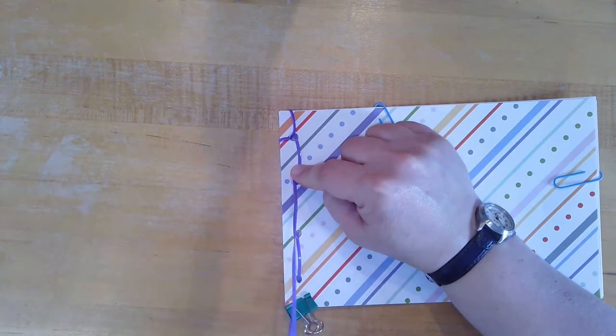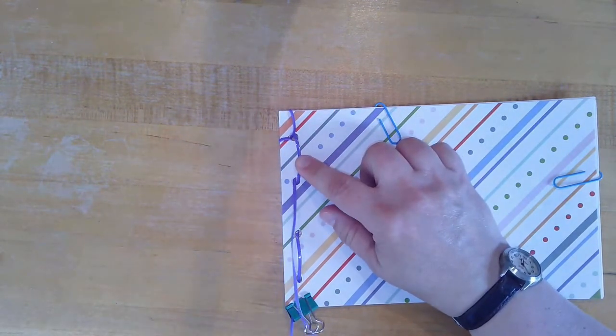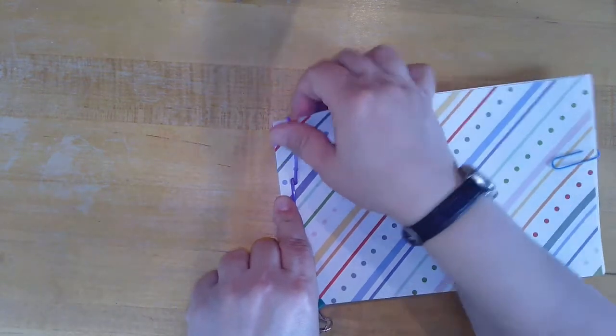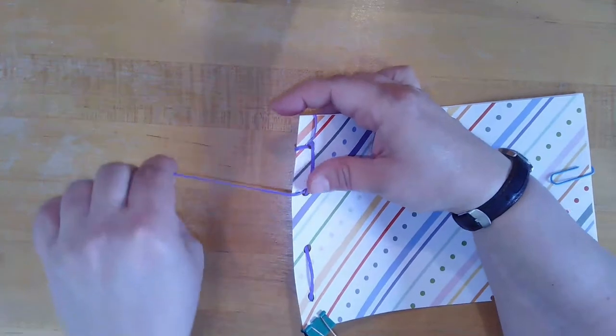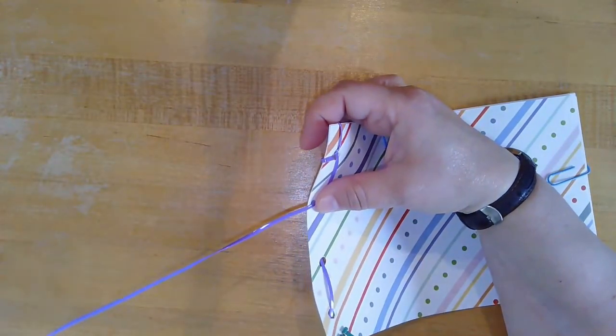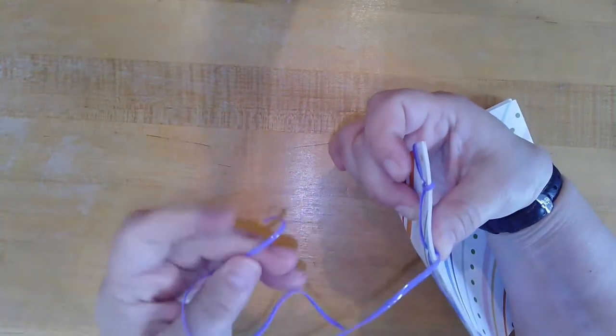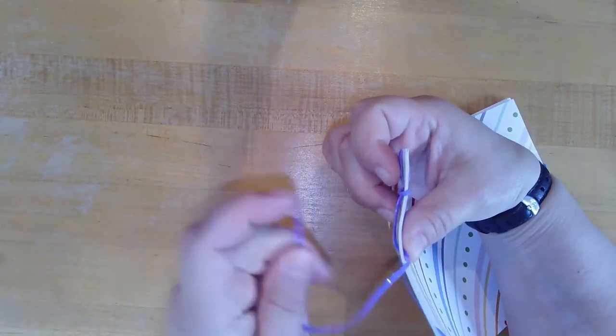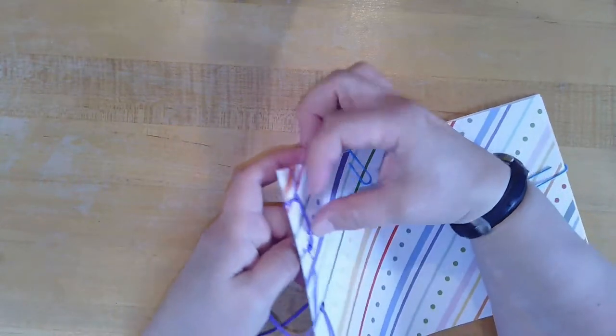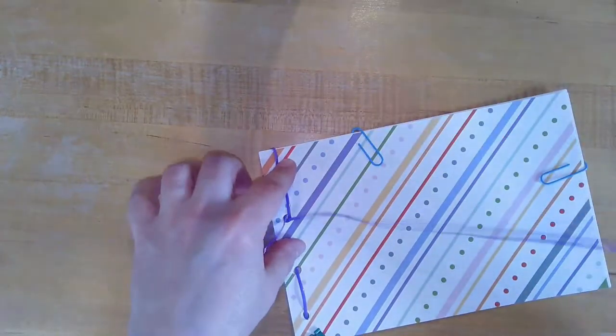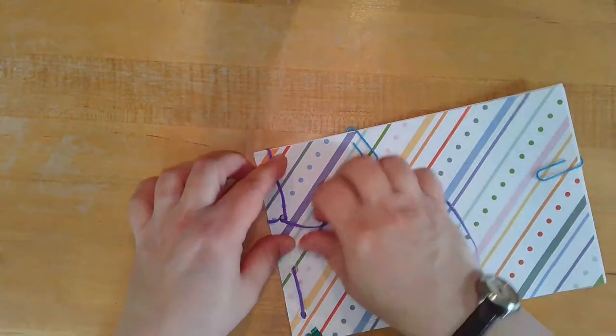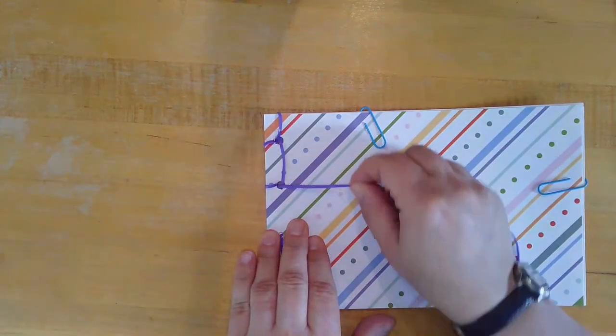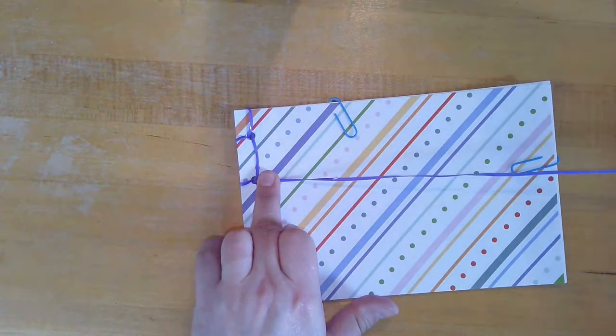Everything should be nice and flat. And you're going to bring your string out and around again to bind the side. And it's going to push in from the back through that second hole again to the front. Nice and neat, nice and flat. Everything's all tight.